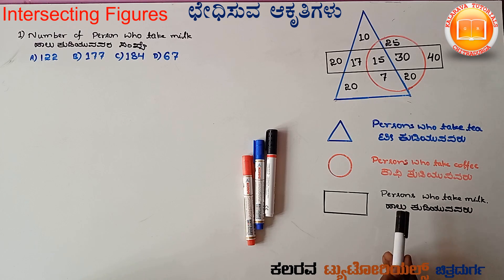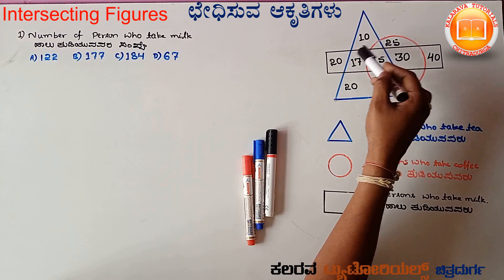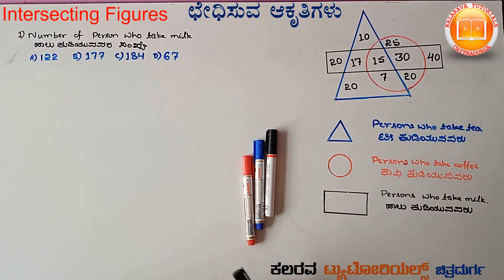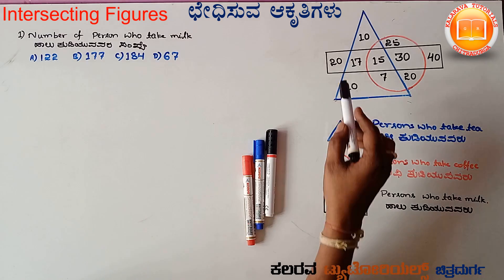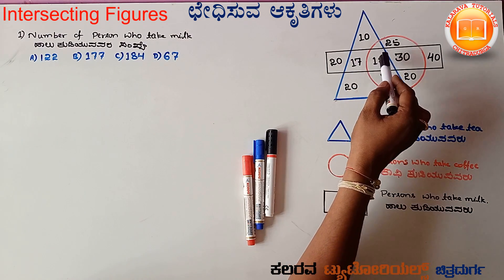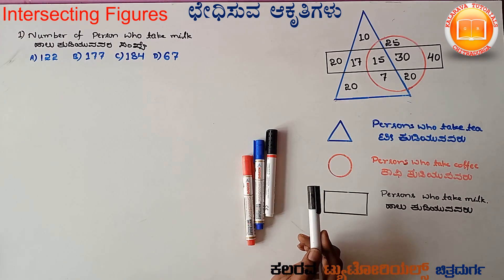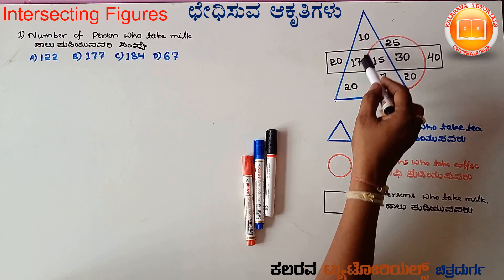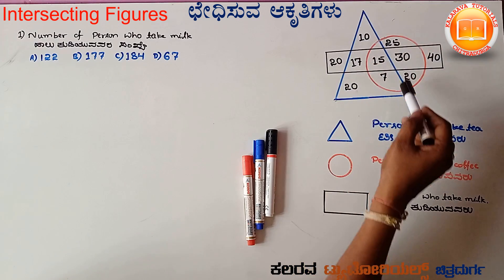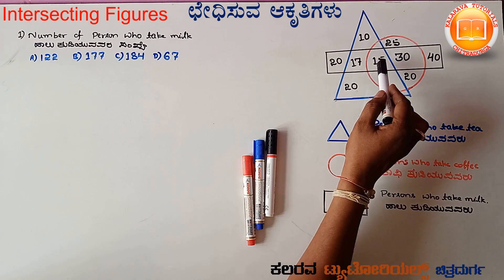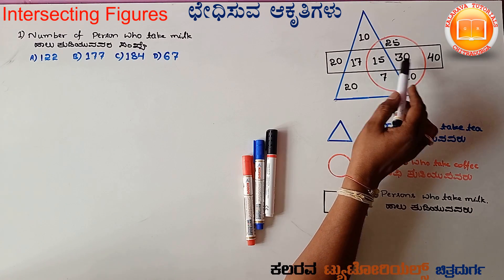And then the persons who take milk — here is a rectangle. In this rectangle, all the numbers belong to the persons who take milk. The numbers within the rectangle are 20, 18, 23, and 44. This covers the circle, triangle, and rectangle regions.